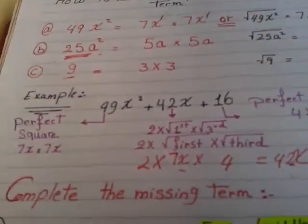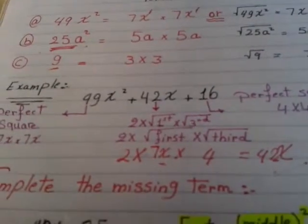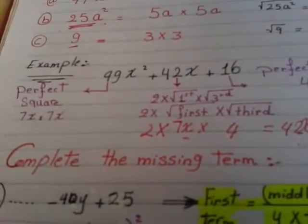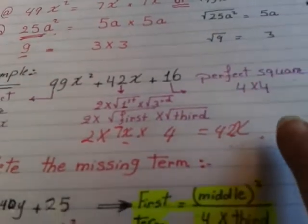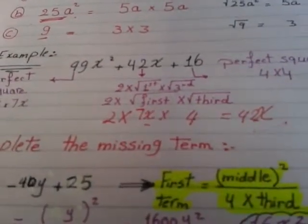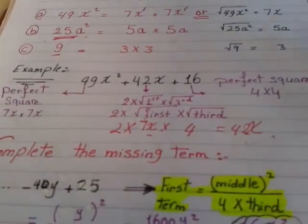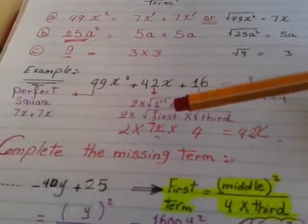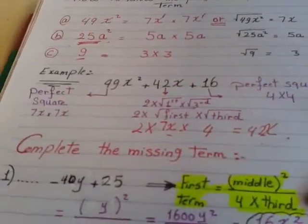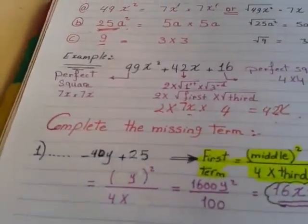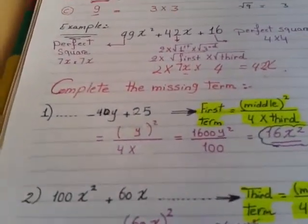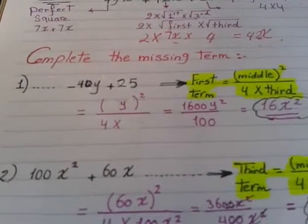Again. How to get that this trinomial is perfect square or not? I have the first must be perfect square. And the last must be perfect square. And the middle is according to the rule 2 by root first by root third. Let's complete and let's study the first kind of exercise according to this kind of factorization.